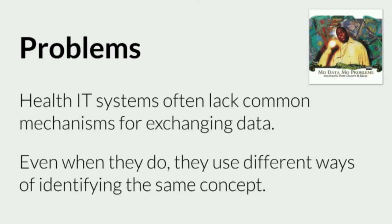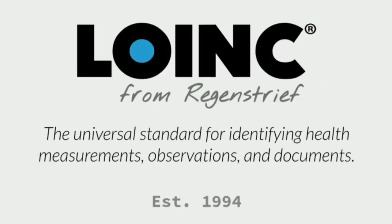You encounter two types of problems. The first is that different health IT systems lack common mechanisms for exchanging data — that's of course what FHIR goes a long way to helping address. But the second type of problem is that even if they do have these common mechanisms, these systems will often have different ways of identifying the same concept. And so that was the genesis behind which LOINC was created and why we continue to develop it today.